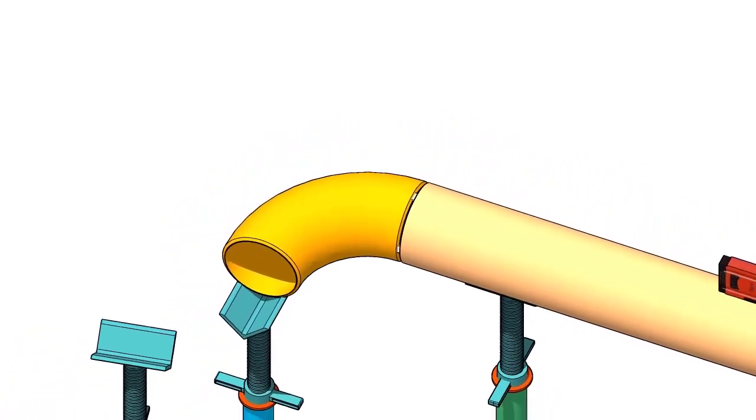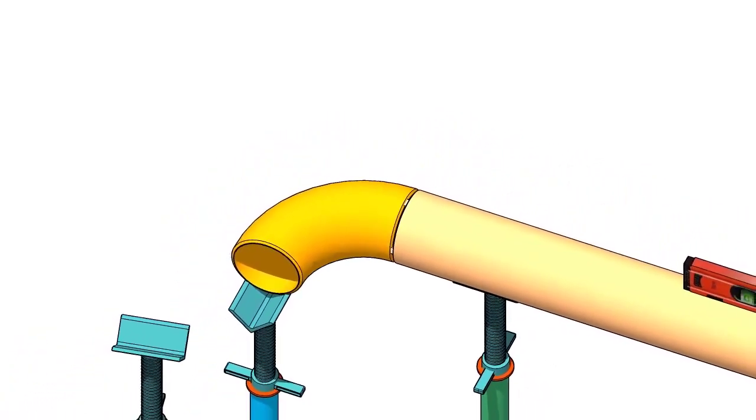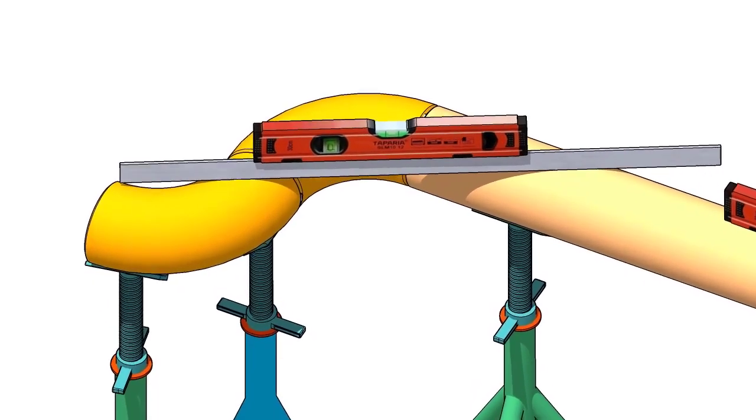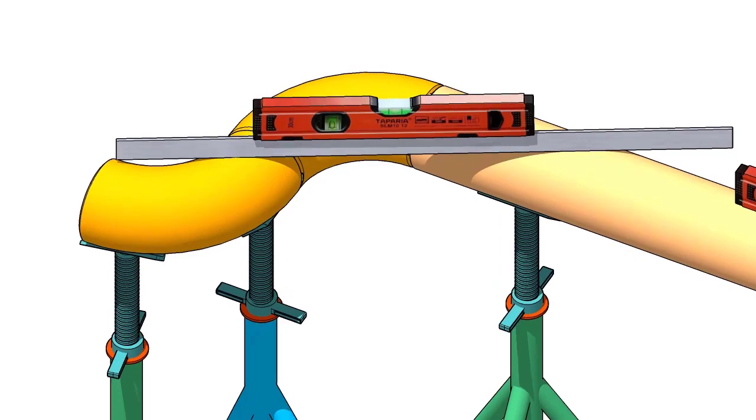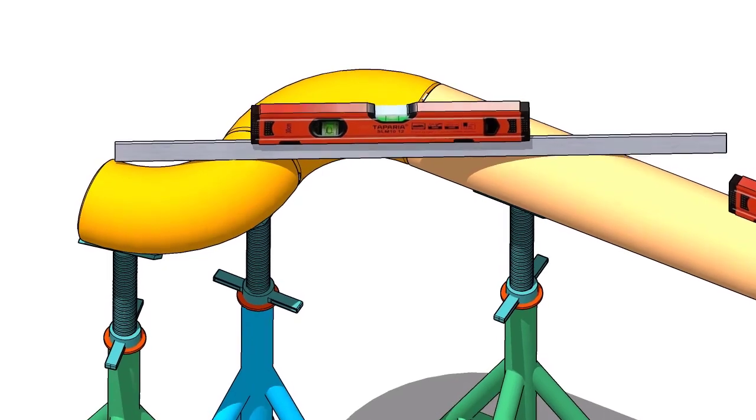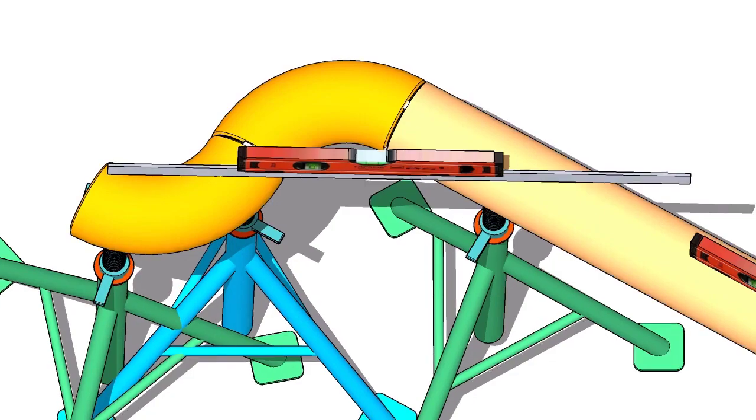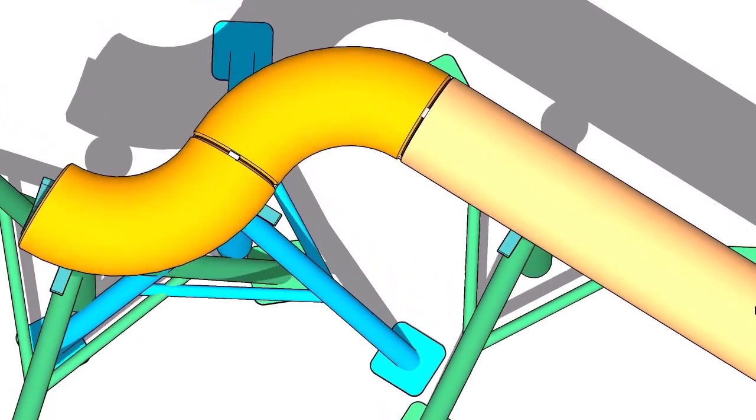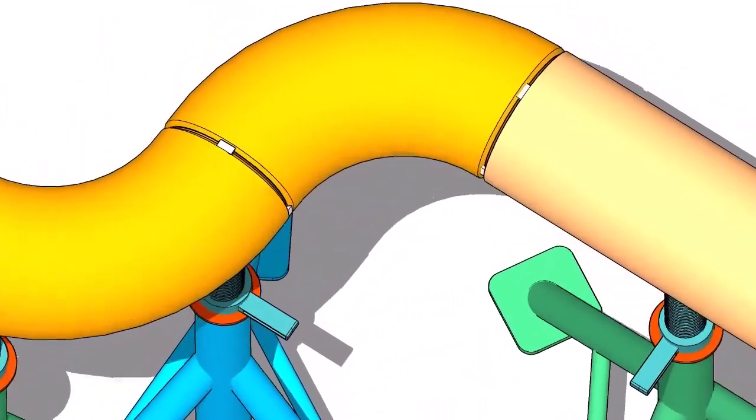Put the elbow on the stand and check the level using a straightedge and a spirit level. Check the face level of the elbow, then tack weld on the top and the bottom.